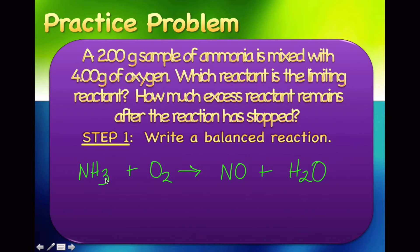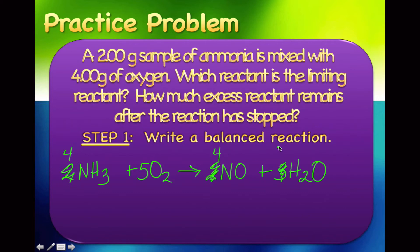To balance the equation, I look at hydrogens: 3 on the left and 2 on the right, so I go for 6, giving 3 H2O. That gives 2 nitrogens, so I put a 2 in front of NH3. On the oxygen side, 3 plus 2 equals 5, which is odd, so I put 5 in front of O2 and double everything else: 4 NH3, 5 O2, 4 NO, 6 H2O. Checking: 4 N, 12 H, and 10 O on both sides — balanced.